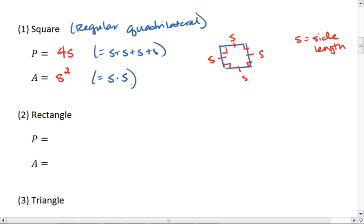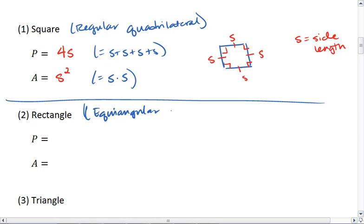Next, we have rectangle. A rectangle is an equilateral, sorry, not equilateral, equiangular quadrilateral.